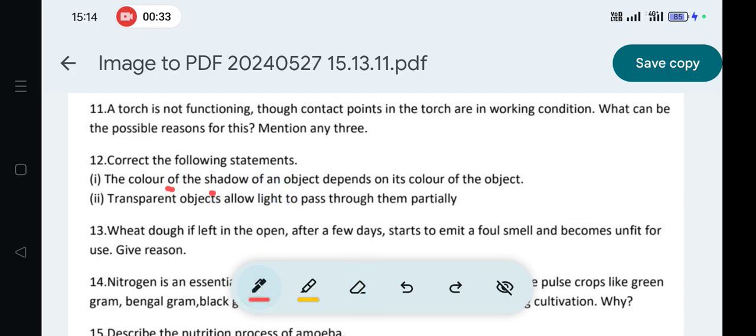The color of the shadow of an object depends on its color of the object. When the object is opaque, it casts a shadow. When it is transparent, it casts a shadow. When it is translucent, it casts a shadow. The shadow does not depend on the object's color.